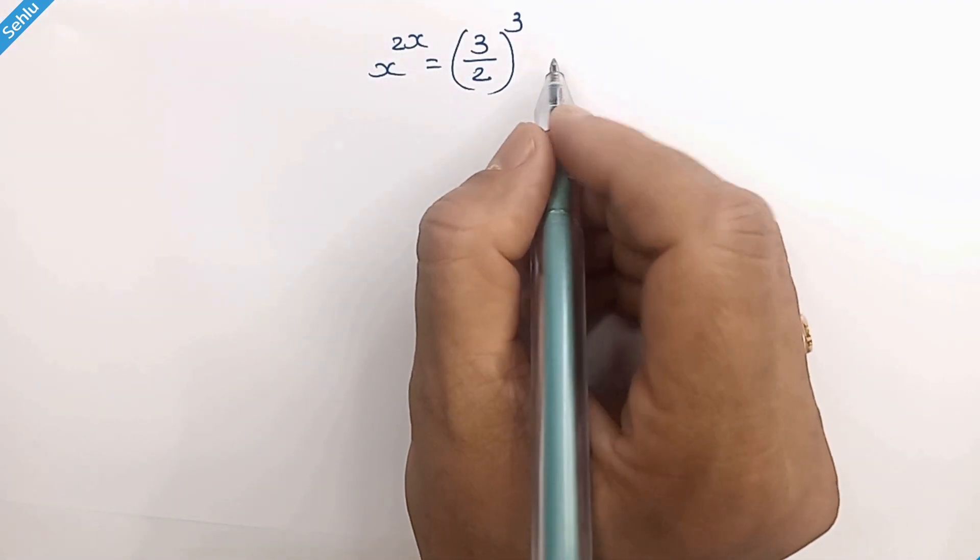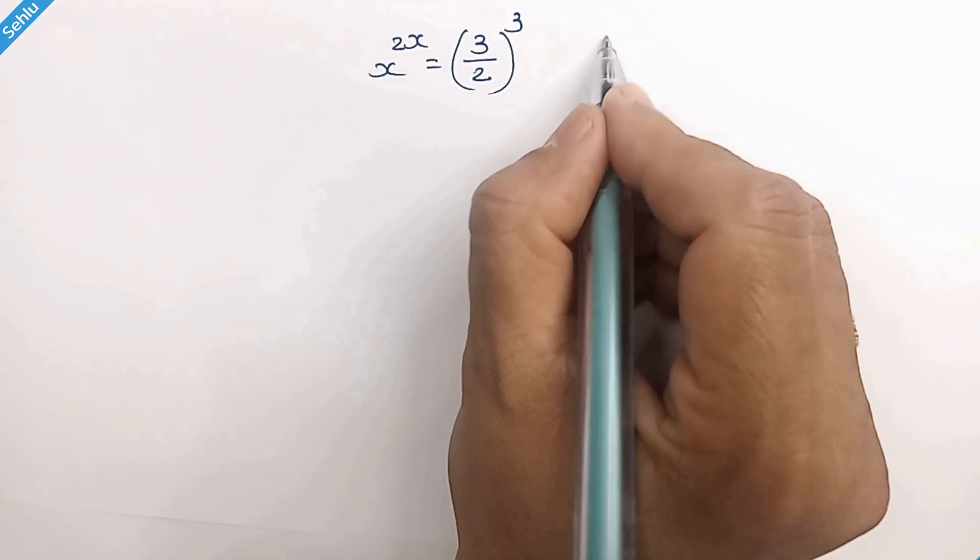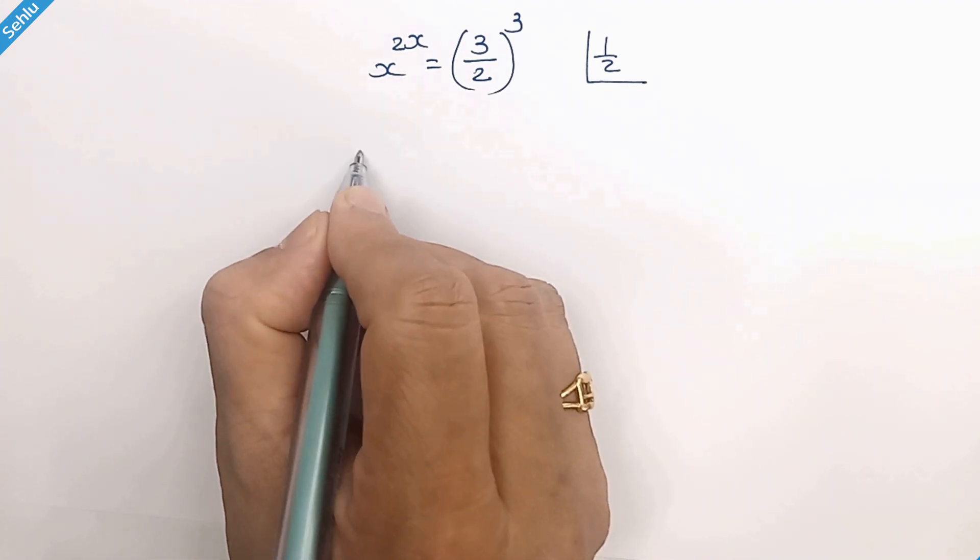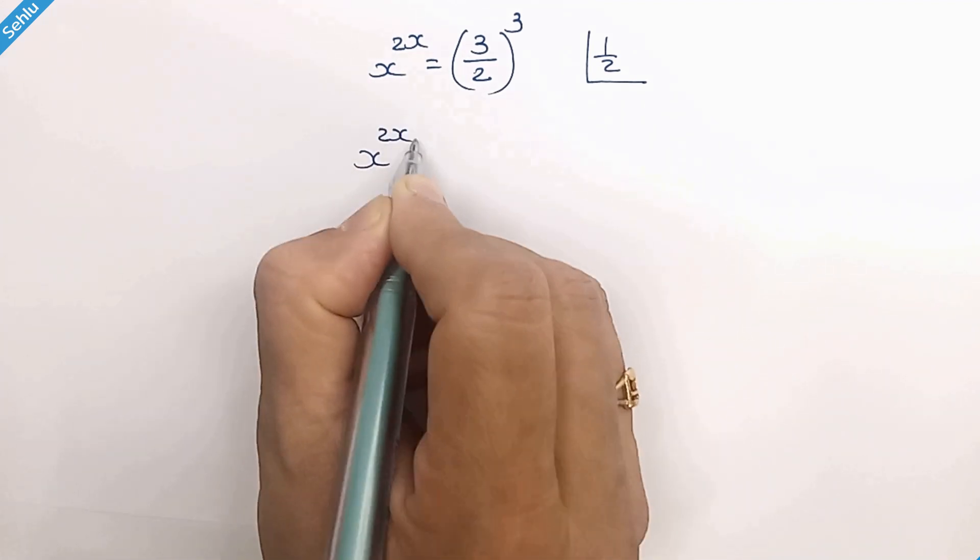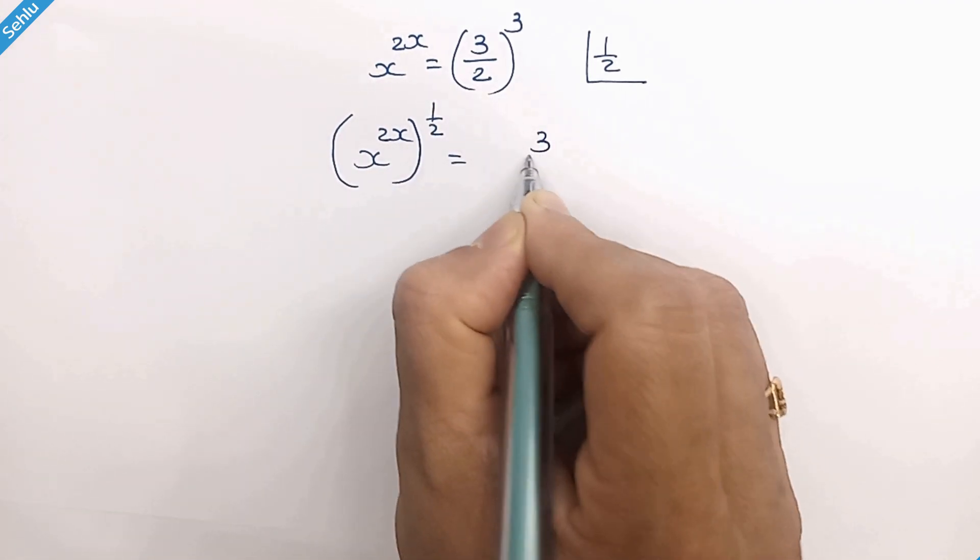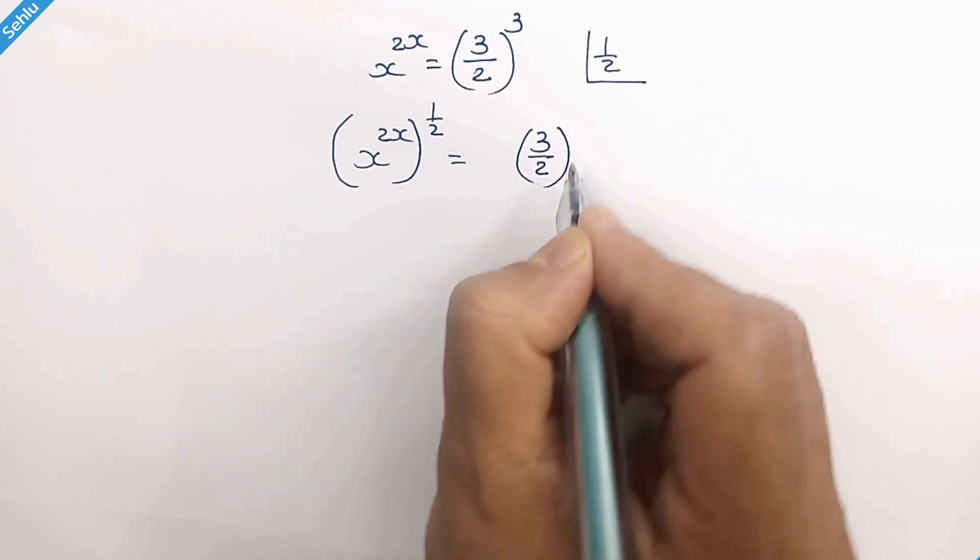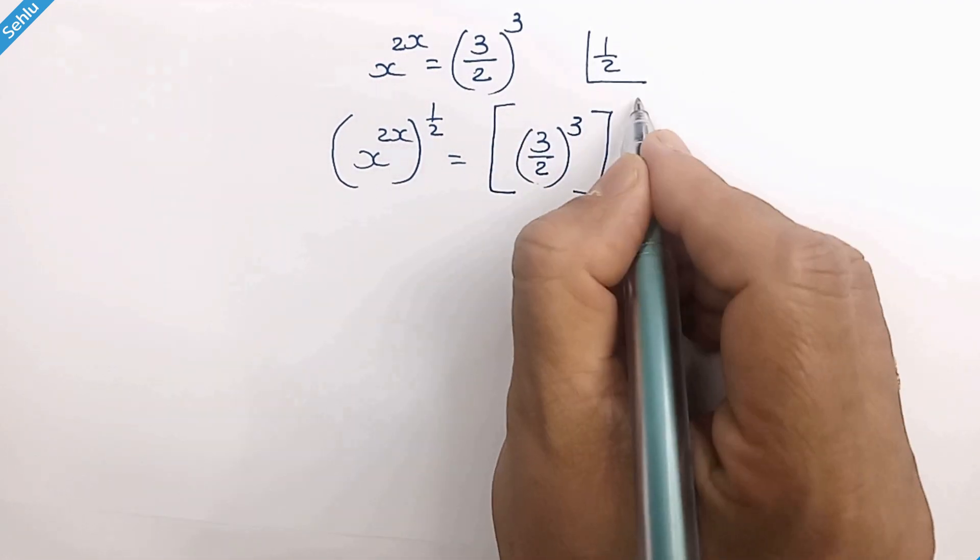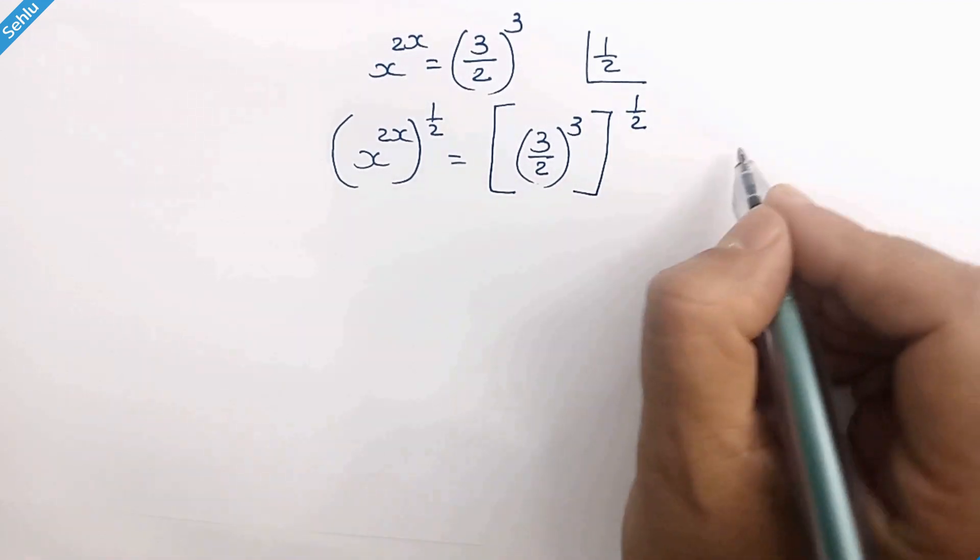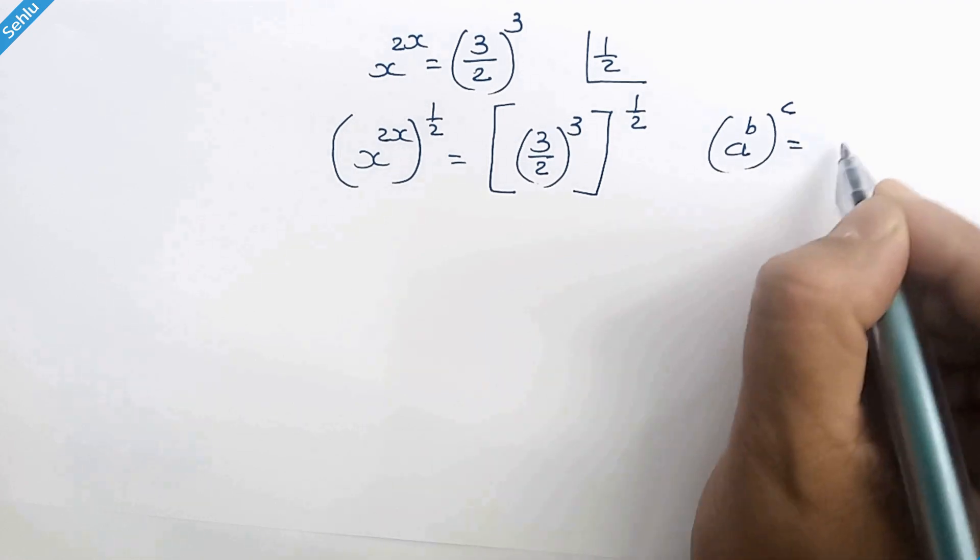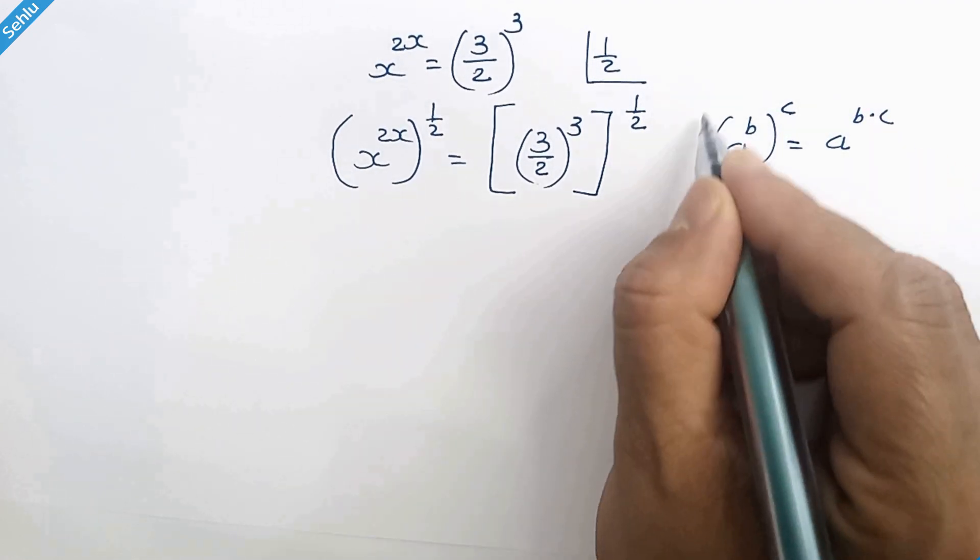Now what we are going to do is let's raise 1 over 2 both the sides. So it will be x to the power 2x whole to the power 1 over 2 is equal to 3 over 2 whole to the power 3 whole to the power 1 over 2. Now when we have a to the power b whole to the power c then it can be a to the power b times c.